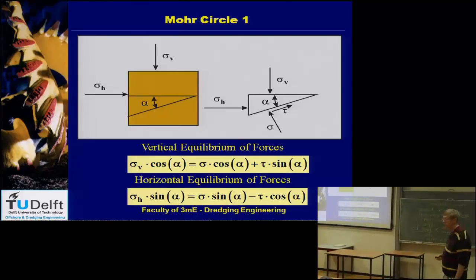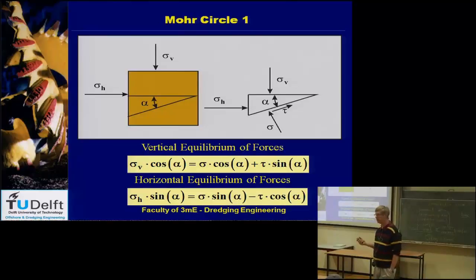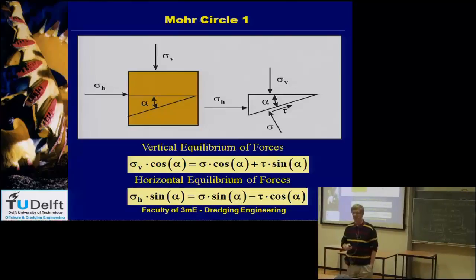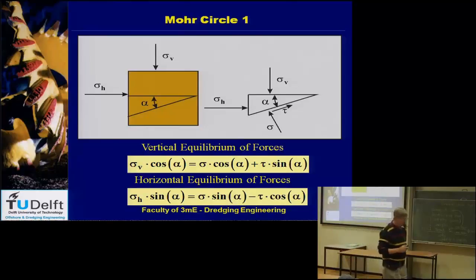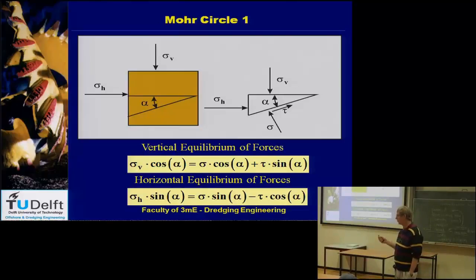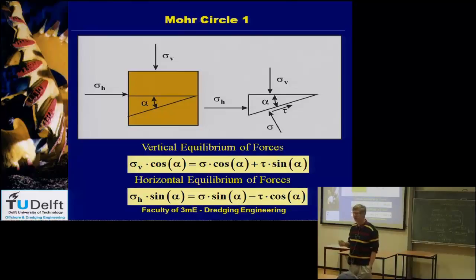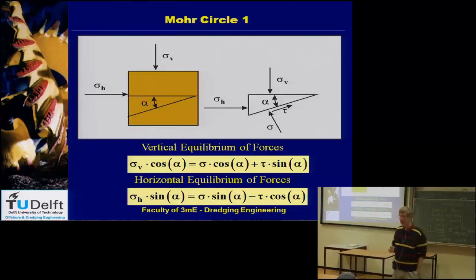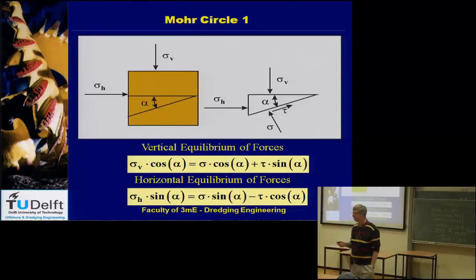For the tau, you do not yet know in which direction it acts — it could be in either direction — but if you choose the wrong direction you will get a minus sign in front of tau, and the result will still be correct. In general, you should have a good definition of positive and negative axes. In soil mechanics, compression is positive and tensile is negative, while in mechanical engineering it is the other way around — tensile is positive and compression is negative.